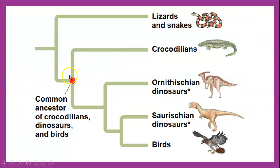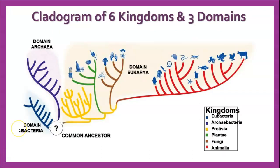Here's another cladogram showing a common ancestor for crocodilians, ornithischian dinosaurs, saurischian dinosaurs, and birds — different from the common ancestor of all reptiles and birds that would include lizards and snakes. The nodes tell us about common ancestors, and we can look at characteristics to see what separates these groups. There's also a cladogram showing evolutionary relationships between the six kingdoms and three domains: Domain Eukarya in red — animals, plants, fungi, and protista — Domain Archaea in purple, and Domain Bacteria. Everything derives from a common ancestor from way back in the past. And that's it, thank you.